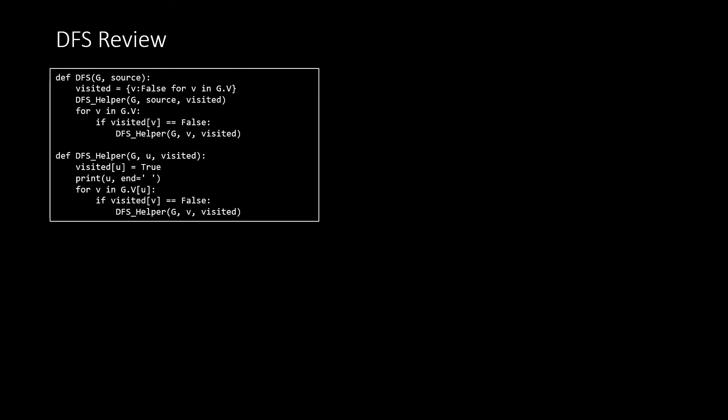Depth first search is needed for this problem, so let's quickly refresh ourselves on the algorithm. I'll assume you're familiar with DFS — if not, watch the linked video in the description before continuing. Depth first search starts at a source vertex and traverses the graph going deeper whenever possible. Every visited vertex is marked, and at the end all nodes reachable from the source should be marked visited. If not all vertices are reachable, we choose a new unvisited vertex and continue until all vertices have been visited.